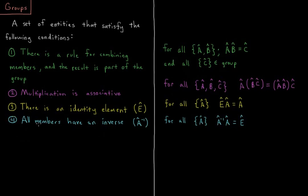And four, all members have an inverse, which I can represent as that operation to the negative one power. And an inverse will be defined such that the operation followed by its inverse operation yields a net result of the identity of having done nothing.